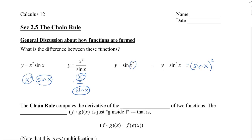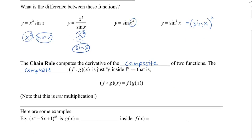The chain rule is used to compute the derivative of the composite of two functions. The composite is f of g of x, which means that g is inside f. Written in function notation, f of g of x equals f bracket g of x, close bracket. Notice that this is not multiplication — we're taking the number, doing the inside part first, and then applying it to the outer function.